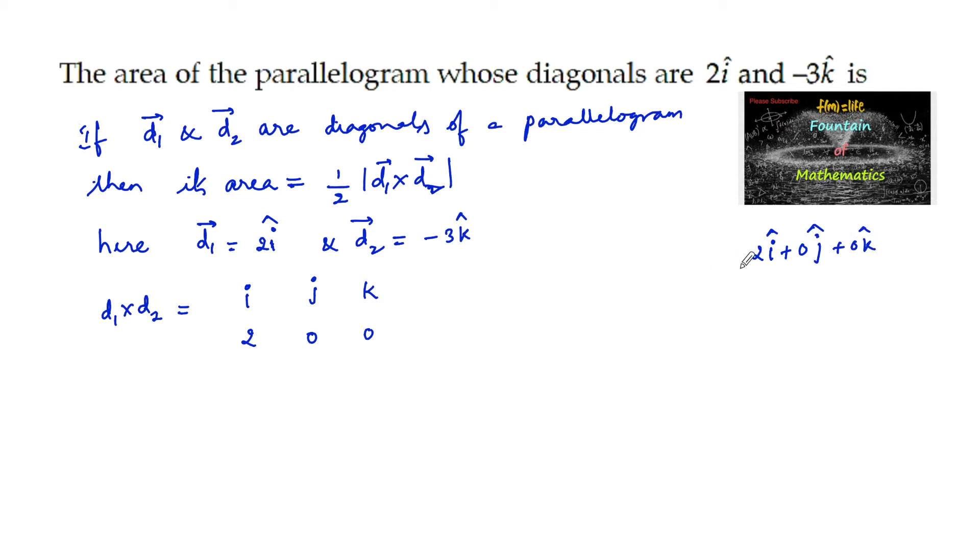0k cap. This is the first diagonal d1. The d2 vector is 0i cap plus 0j cap minus 3k cap. So for the second diagonal, the scalar components are 0, 0, and -3.